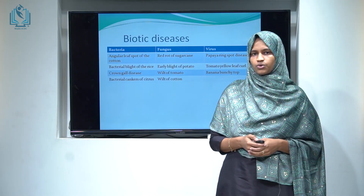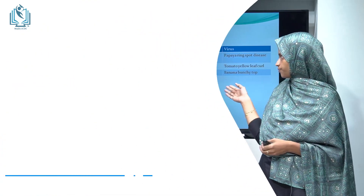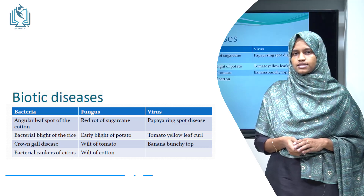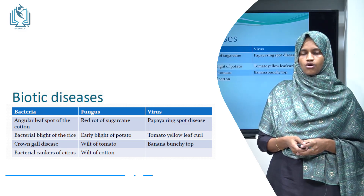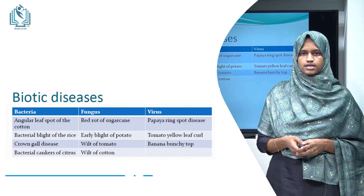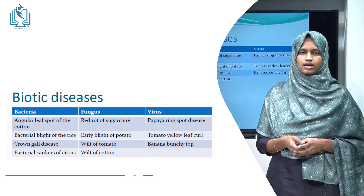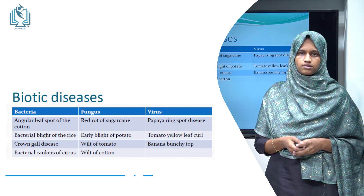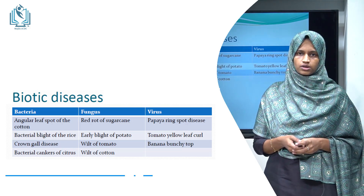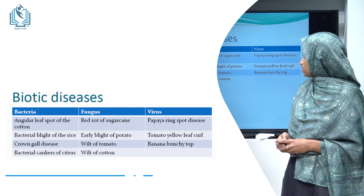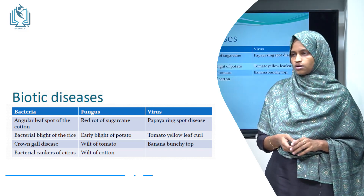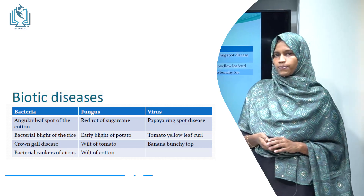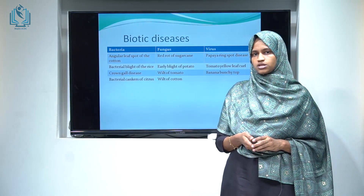Some examples of biotic diseases: Bacterial diseases include angular leaf spot of cotton, bacterial canker of citrus, bacterial blight of rice, and crown gall disease. Fungal diseases include red rot of sugar cane, wilt of tomato, wilt of cotton, and early blight of potato. Viral diseases include tomato yellow leaf curl, papaya ring spot disease, and banana bunchy top disease.